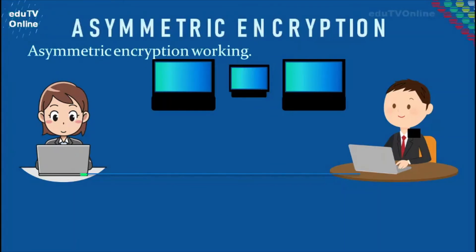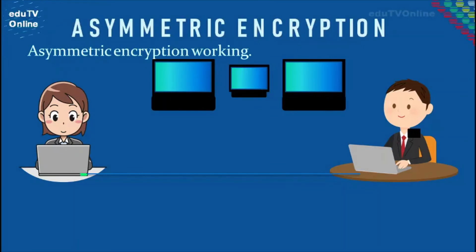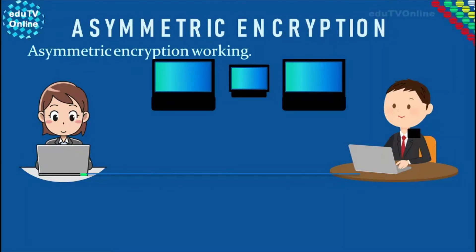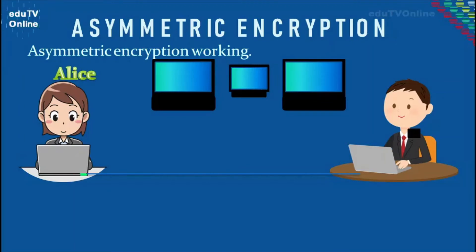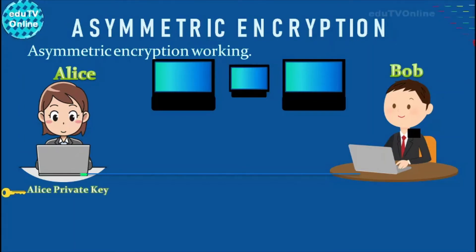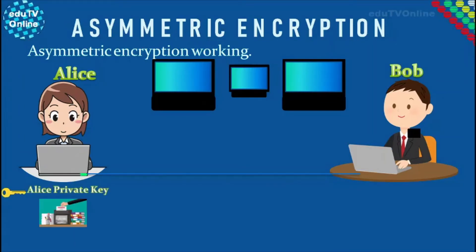Next, we can look at how asymmetric encryption is used to send a private message. For example, Alice wants to send a private message to Bob. First, Alice applies her private key to encrypt the message.